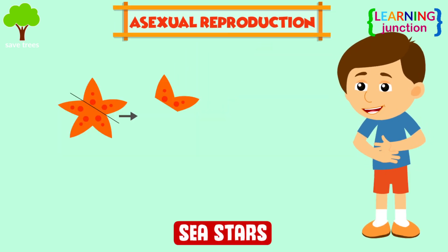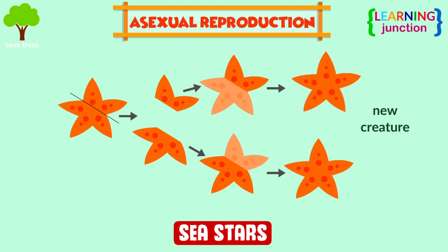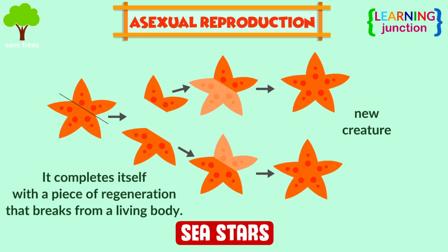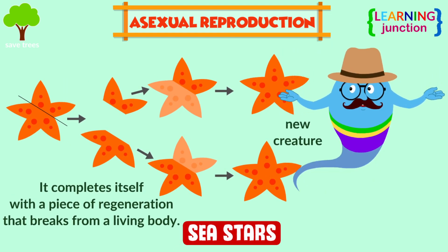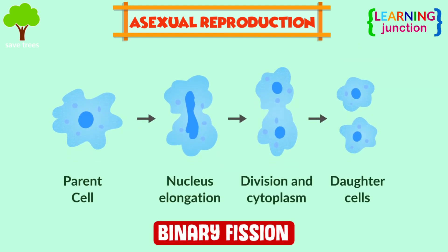Asexual reproduction is a mode of reproduction that does not entail the union of gametes, or the sex cells. There are four main types of asexual reproduction. Binary fission: the cell splits into two, and each cell carries a copy of the DNA from the parent cell.